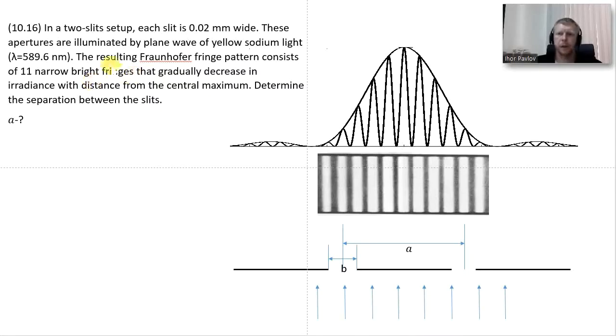Here we have an example of diffraction on two slits. This is problem 10.16 from Hecht's textbook. It says that in a two-slit setup we have each slit width which is 20 microns, this is b on the image.